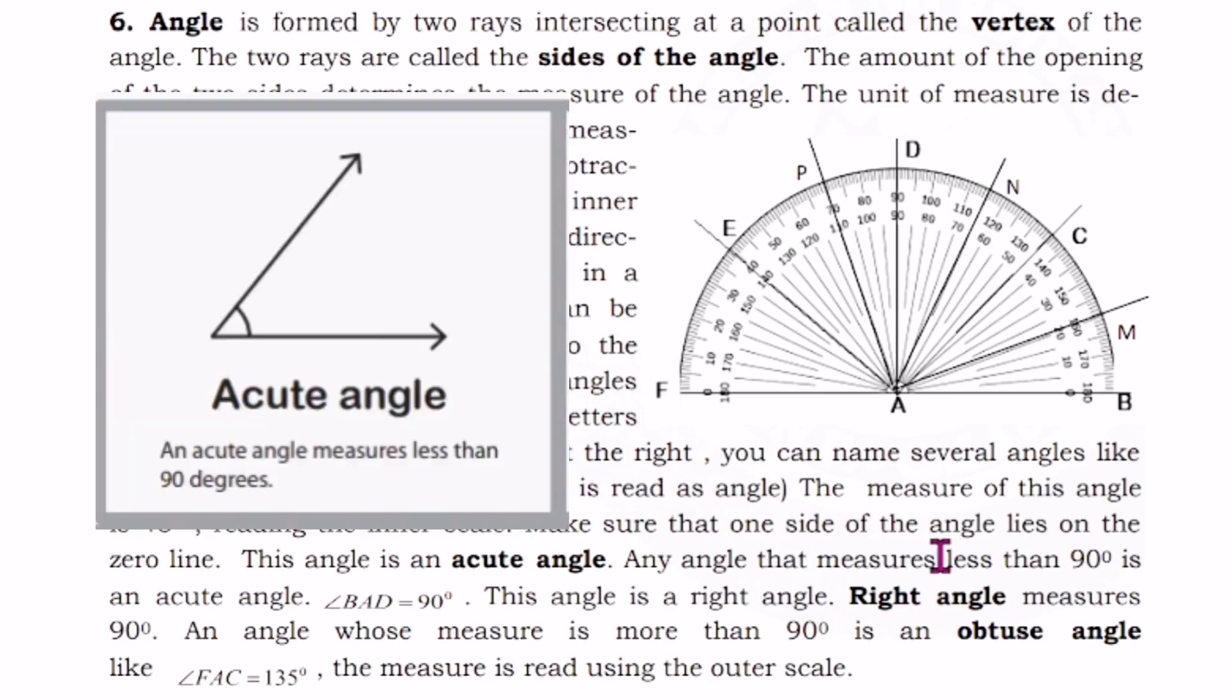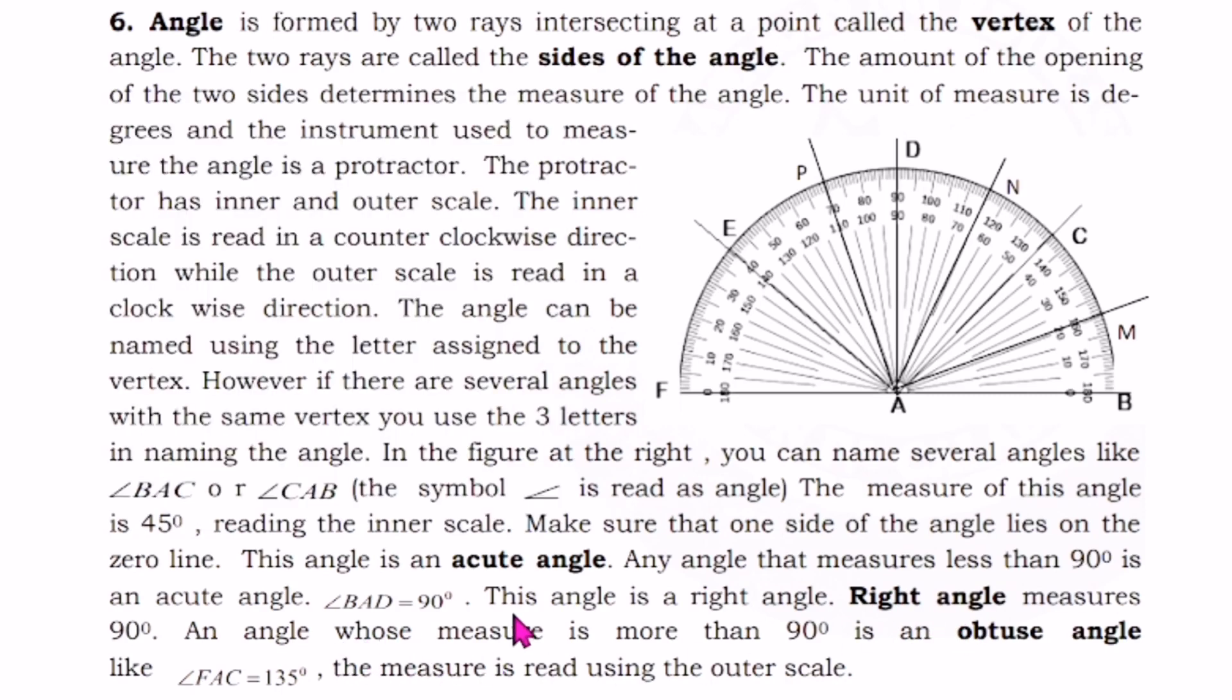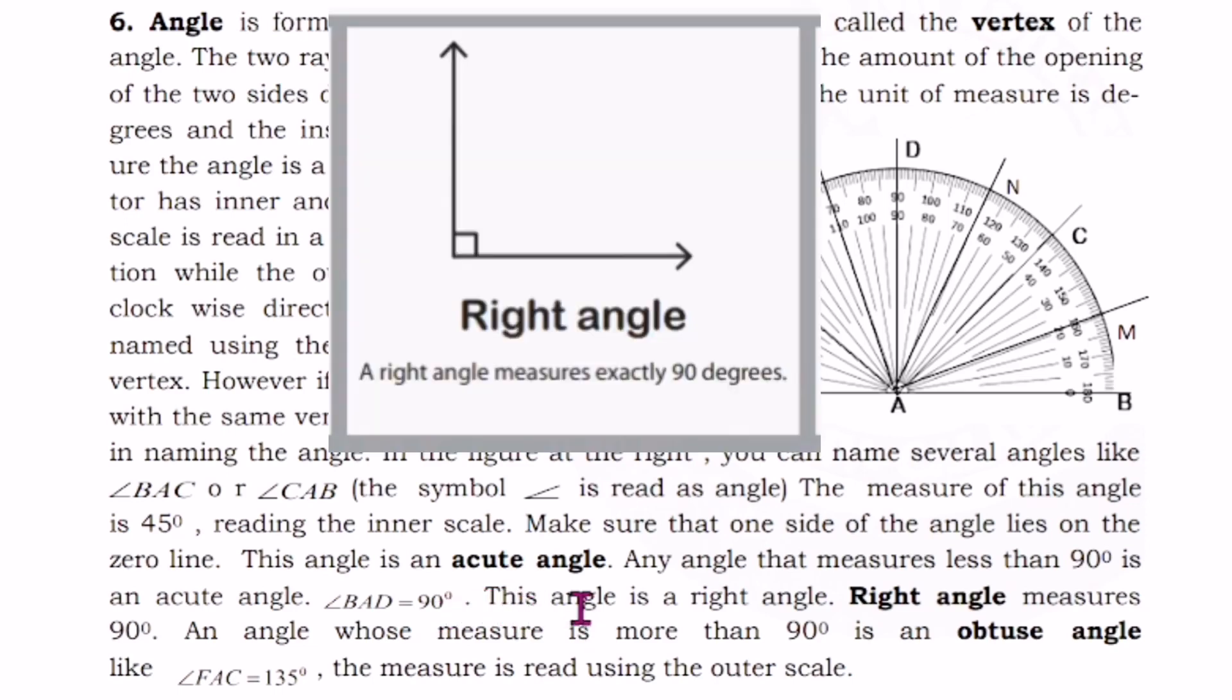This angle is an acute angle. Any angle that measures less than 90 degrees is an acute angle. Angle BAD equals 90 degrees. This angle is a right angle.